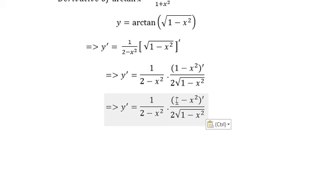The first derivative of 1 is 0, and the first derivative of x squared is 2x, giving us negative 2x.